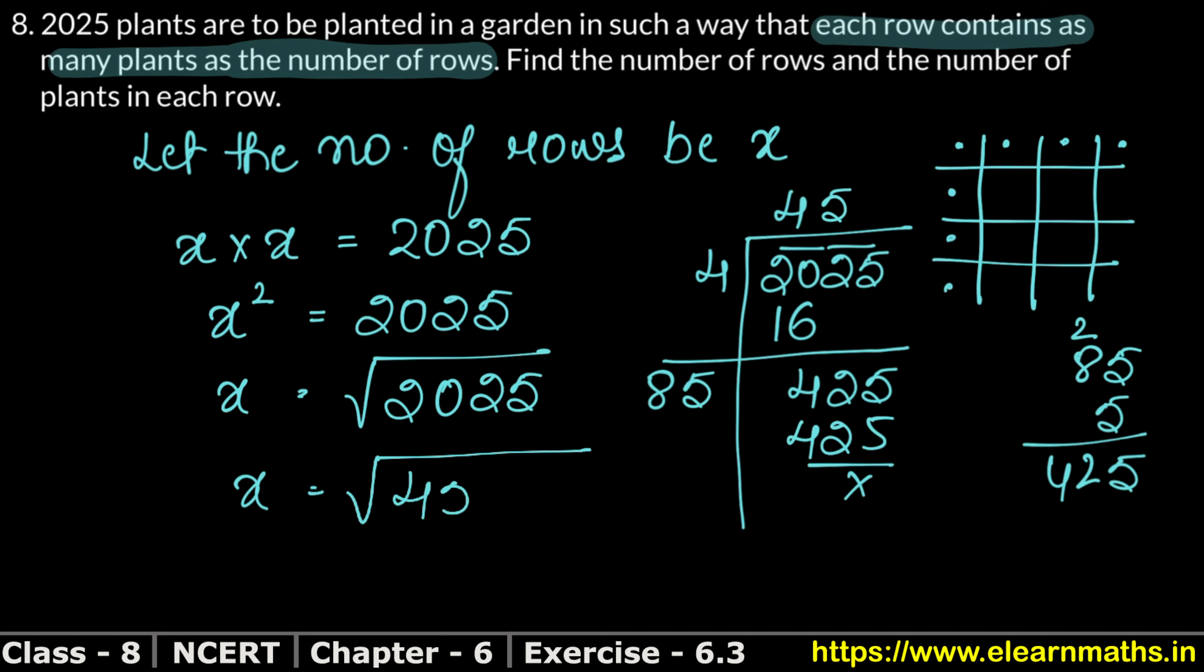So you can see 45 into 45, and once x value comes out, the number of rows came out. So 45 is the answer.